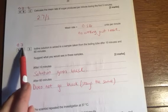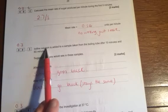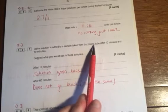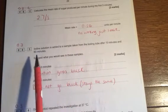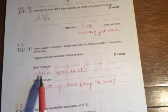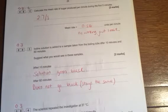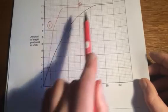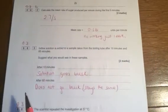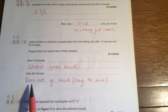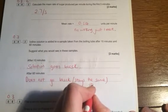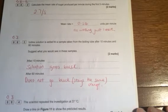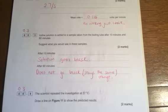Iodine solution is added, question 3.3. Iodine solution is added to a sample taken from the boiling tube after 10 minutes and after 60 minutes. So we're looking at the solution after 10 minutes. I've suggested it goes black. If you look at this graph that's simply because there's still quite a lot of starch there. It hasn't all been turned into sugar. However after 60 minutes I've suggested that the iodine doesn't go black it actually stays the same colour which you know to be orange. Why? Because sugar is made at that point. You can tell on the graph as it goes up.